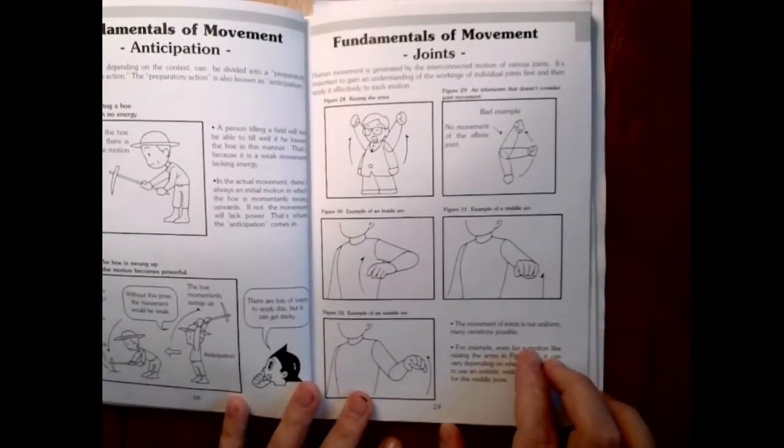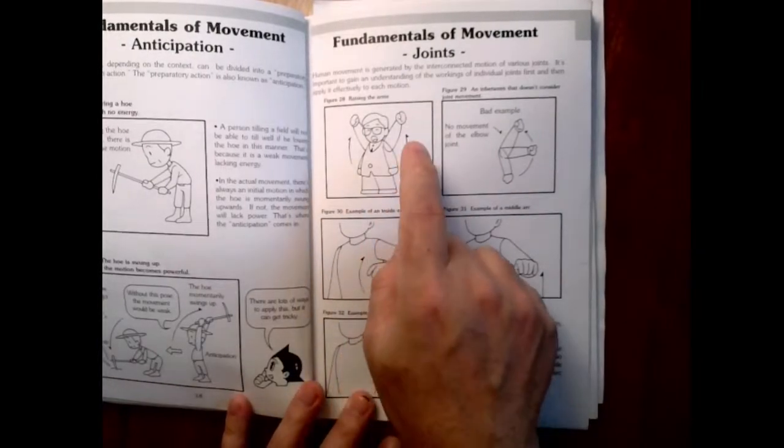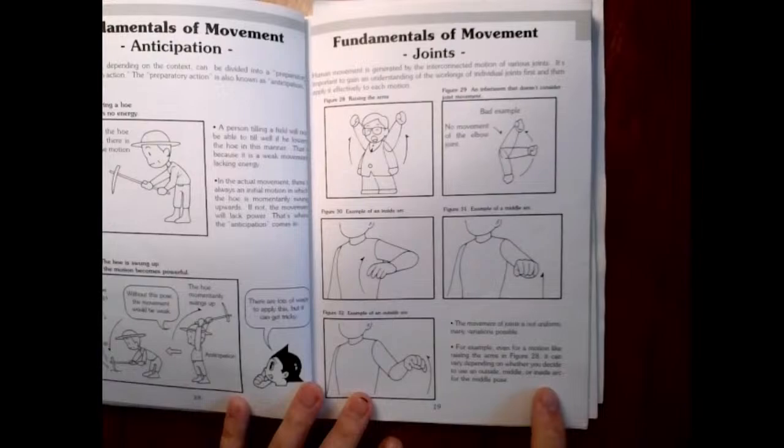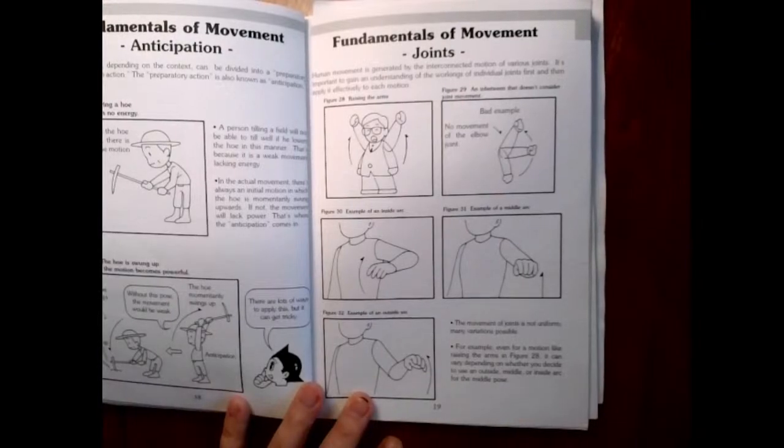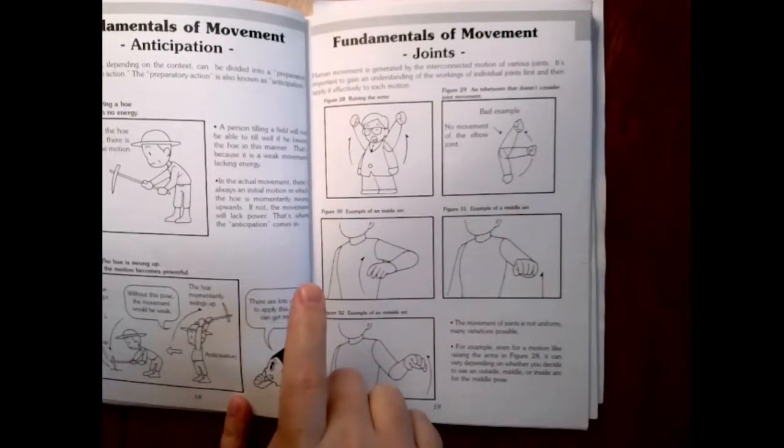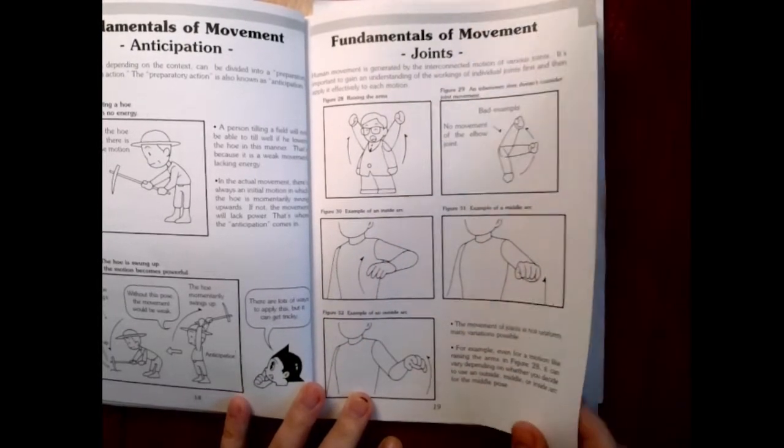The movement of the joints is not uniform. For example, even for a motion like raising the arms, it can vary depending on whether you decide to use an outside, middle, or inside arc for the middle pose.